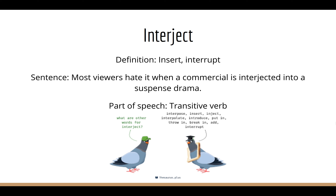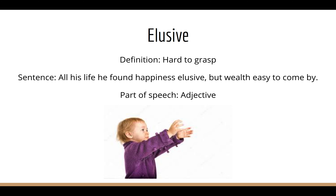The next word is Elusive. Elusive means hard to grasp. A sentence: all his life, he found happiness elusive, but wealth easy to come by. Part of speech is an adjective. In the picture, there's a person reaching for something she can't actually hold. Everything requires work — whether it's happiness or wealth, nothing comes easy.